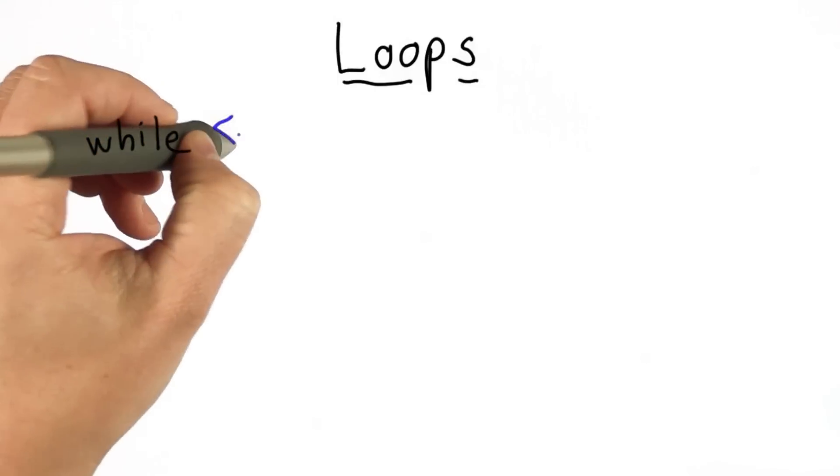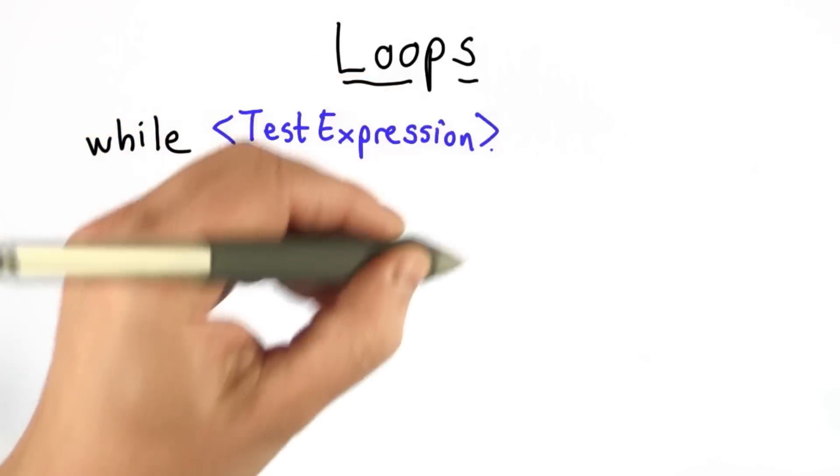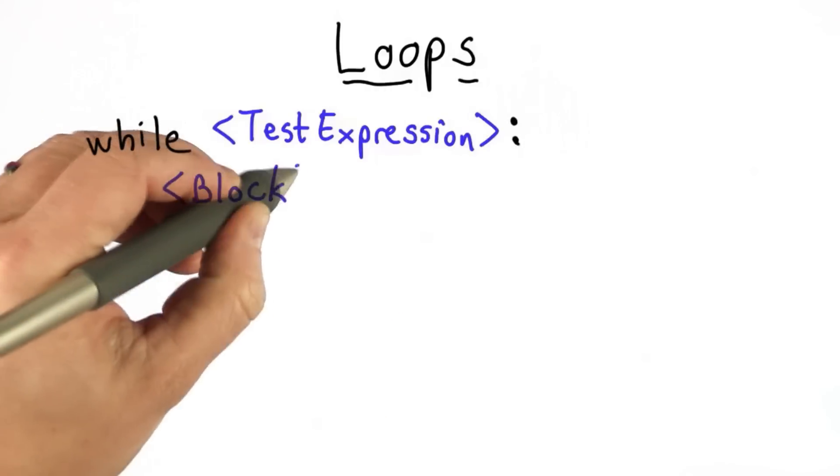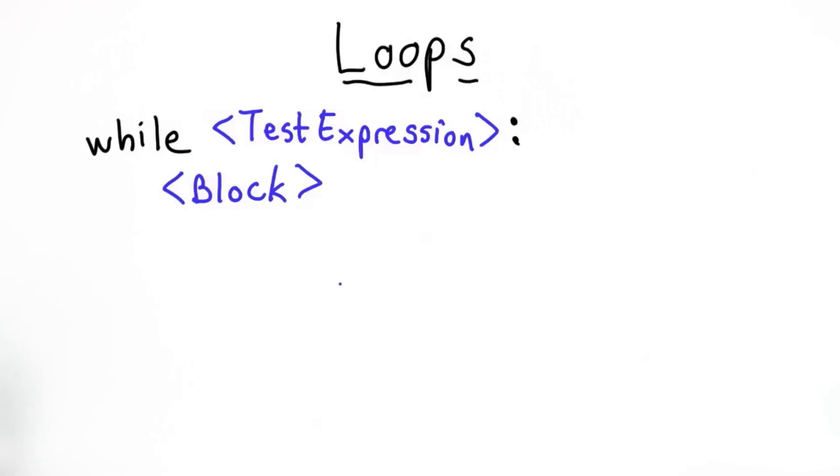The syntax for the while loop is this. We have the keyword while, followed by a test expression, followed by a colon, and then inside we have a block, and the block is a sequence of instructions.